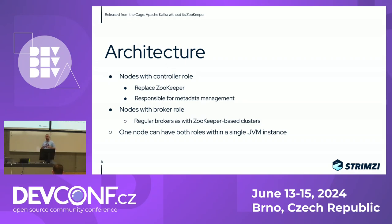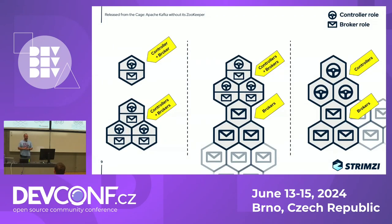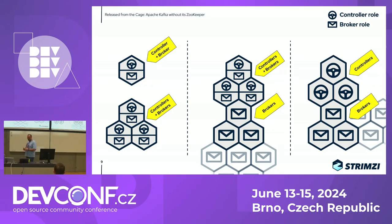What makes it really interesting is that you can mix these roles in the same JVM, same process, same container. That gives you a wide range of different architectures. The simplest is a single-node architecture — one pod on Kubernetes, one container, one process running both the controller and broker roles. That's all you need to do some Kafka work. But if you want high availability and reliability guarantees, you need to scale it up, for example to three such nodes.